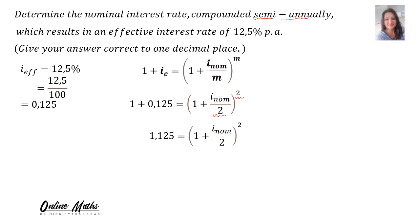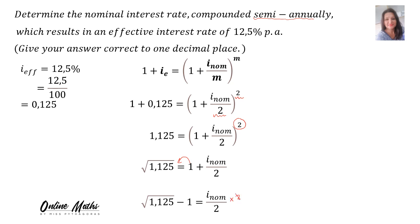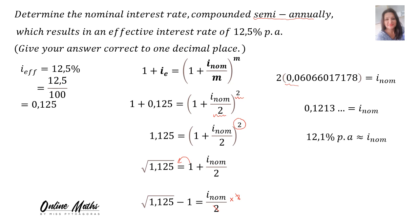1 plus 0.125 is 1.125. To get rid of the square, we take the square root of 1.125. The 1 walks across: square root of 1.125 minus 1. Calculating that gives 0.06..., then multiplying both sides by 2, I-nominal equals 0.1213. As a rate correct to one decimal place, multiply by 100. Therefore, the nominal interest rate is 12.1%.